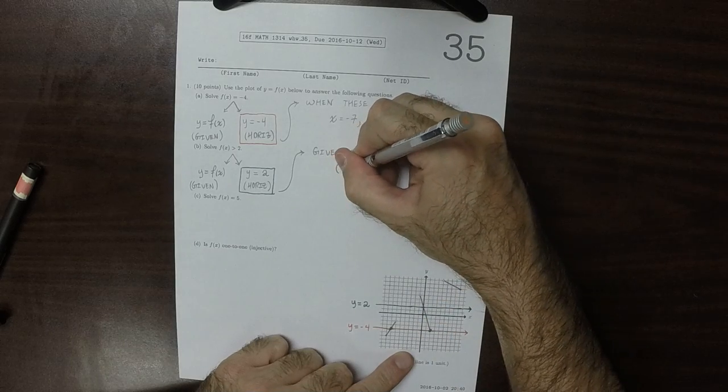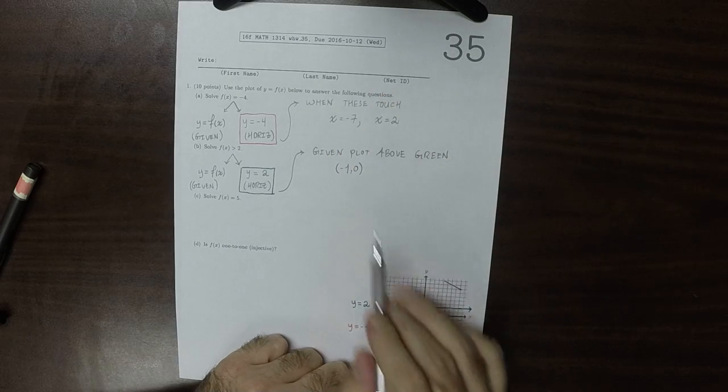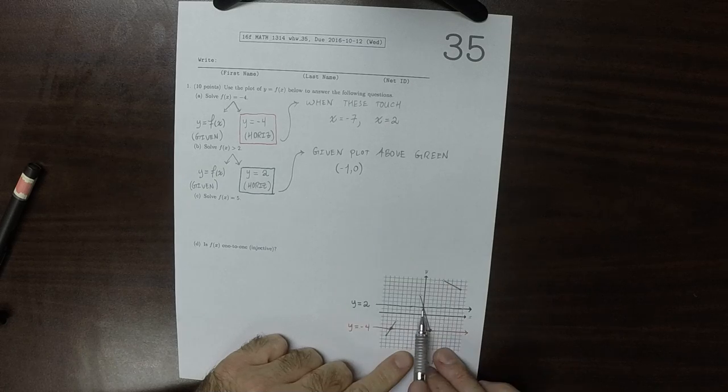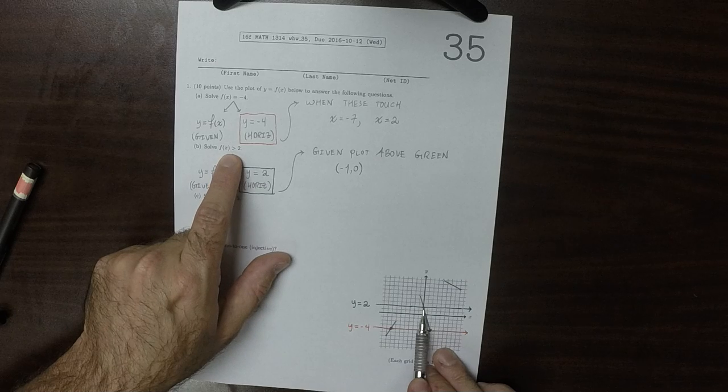So there's a part that's above between negative 1 and 0. We can't include negative 1 because it's open. And we can't include 0 because it's touching there and we need it to be above. It says greater than.